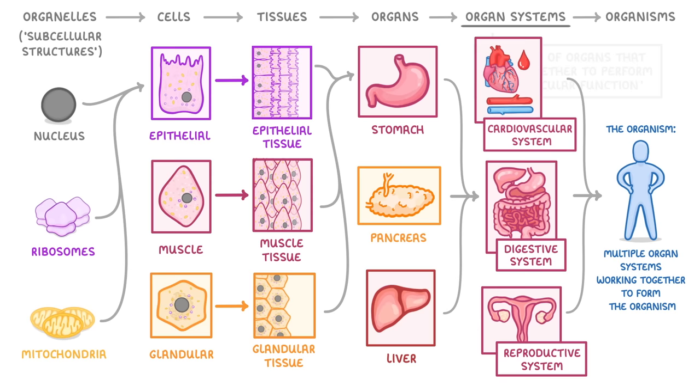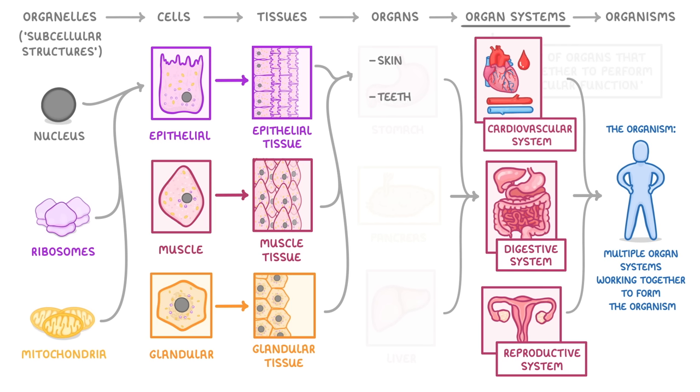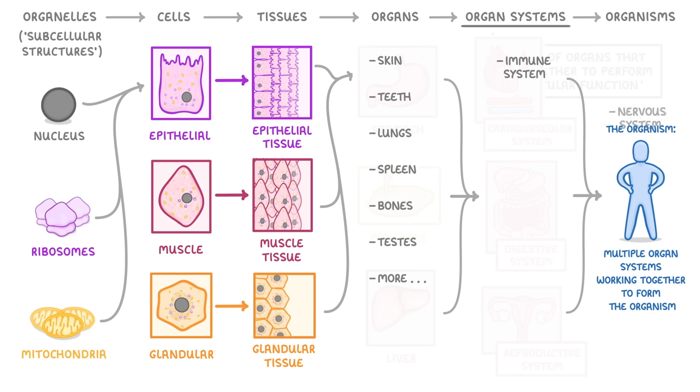One last thing I want to add before we finish is that we've only mentioned a few examples for each level. In reality, there are loads of types of each. For example, other organs include the skin, teeth, lungs, spleen, bones, testes, and dozens more. And there are about 12 different organ systems, including the immune system, nervous system, respiratory system, endocrine system, and urinary system.